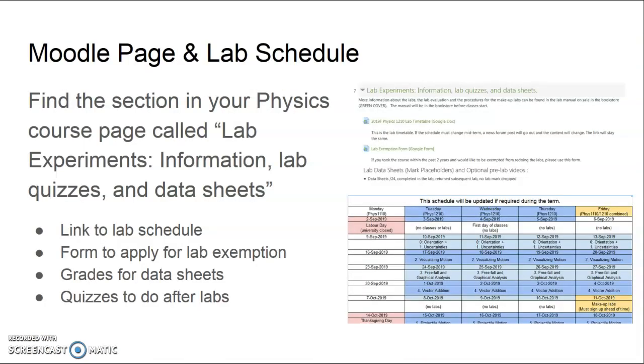On your Moodle course page there is a section with laboratory information. It's called lab experiments information, lab quizzes and data sheets. There you'll find a link to the lab schedule that will tell you what experiment you're doing on different days and there's also a form to apply for a lab exemption if you have completed the course before and have already completed the labs. You will also find placeholder links for where your grades for data sheets will go and links to quizzes that you will have to do after you complete a lab.